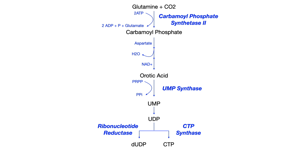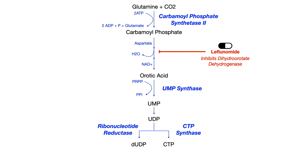A few medications can inhibit various portions of this pathway. Leflunomide inhibits the second step where carbamoyl phosphate is converted to orotic acid — specifically it inhibits the enzyme dihydroorotate dehydrogenase, the step where water is a byproduct. You don't need to know that enzyme for pyrimidine synthesis generally; it only needs to be memorized because leflunomide inhibits it.